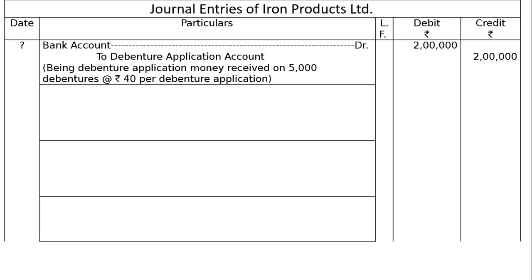First entry: Bank Account debited to Debenture Application Account. Being debenture application money received on 5,000 debentures at the rate of Rs.40 per debenture, including Rs.10 as Securities Premium Reserve. That is 5,000 × 40 = Rs.2,00,000 each in the debit and credit column.